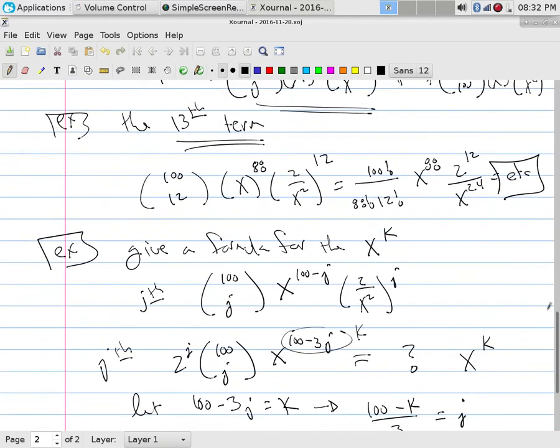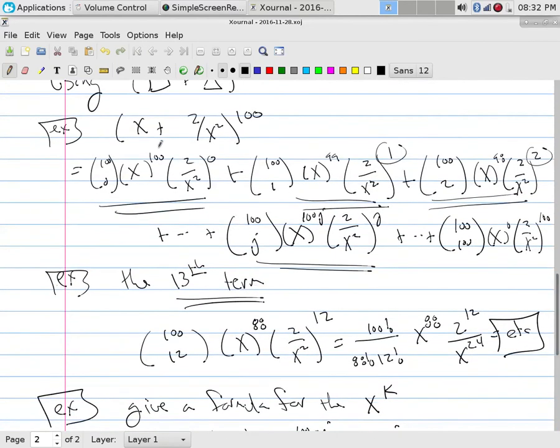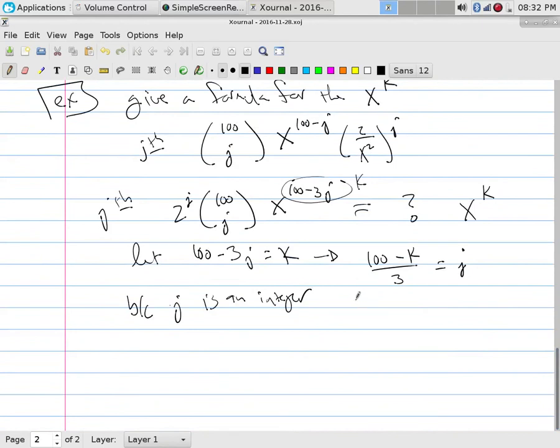Now, this also tells us that because j is an integer, we know that because that's what we used, choose 0, choose 1, choose 2, that was our j's as we were going through here. And so because it's an integer, that tells me that 100 minus k over 3 has to be an integer. So that would tell me that I'm only allowed to pick, if this is not true, then my problem is that I would make that coefficient 0.